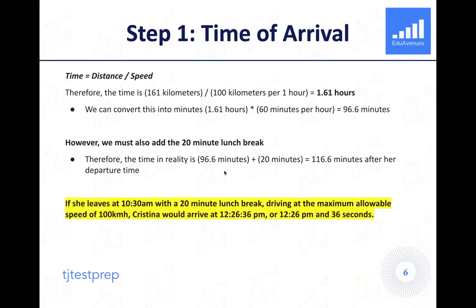We have not yet accounted for the 20-minute lunch break. So in reality, if we're discussing the time that she's calling from grandma's house, it's both going to be the driving time as well as the time for the lunch break. She's going to call about 116.6 minutes after she initially departs at 10:30 a.m. If she leaves at 10:30 a.m. with a 20-minute lunch break and she's driving at the maximum allowable speed of 100 kilometers per hour, that gets her there the fastest, leading to the earliest arrival time as they asked for. Then Christina would be arriving at 12:26:36 p.m., in other words, 12:26 p.m. and 36 seconds.